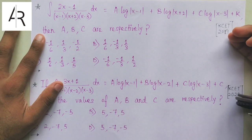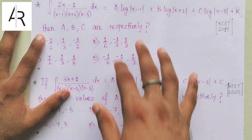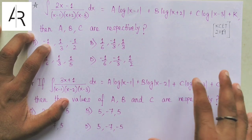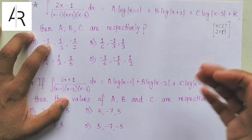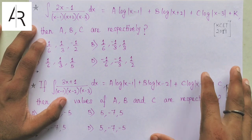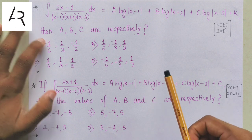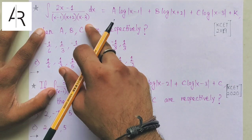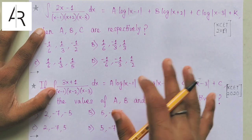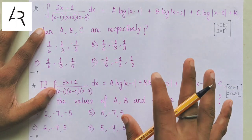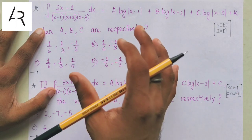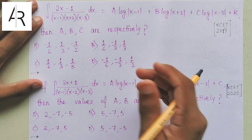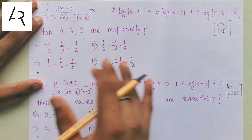I have taken the 2019 question. If you understand this trick, you will easily be able to apply it to other questions because both questions are similar. So what you can do is, instead of integrating, you can differentiate - you can do the reverse process. Differentiate this and you will get: A log(x-1) differentiation will be A/(x-1), then plus B/(x+2), and then C/(x-3), because log x derivative is 1/x. Constant differentiation is 0.